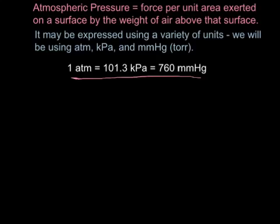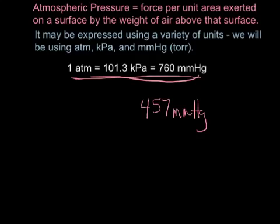Let's say that we go to Pikes Peak, Colorado. Pikes Peak is 14,110 feet above sea level. And if you went up to the top of Pikes Peak with a mercury barometer and measured the barometric pressure, you might find that it was someplace around 457 millimeters of mercury. And if you wanted to know what that would be equal to in terms of atmospheres, we would just use these conversion factors to figure that out.